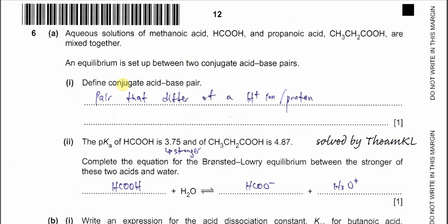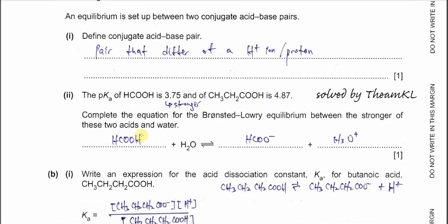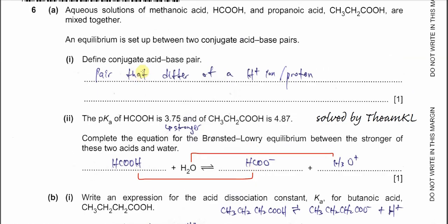Part 1: define conjugate acid-base pair. The pair that differs by one proton only. For example, if we have methanoic acid with water forming the salt and hydronium ion, this is one conjugate acid-base pair because they differ by one proton — the acid releases one proton to form the salt. And water gaining a proton forms another conjugate acid-base pair. So conjugate acid-base pairs differ by one proton.